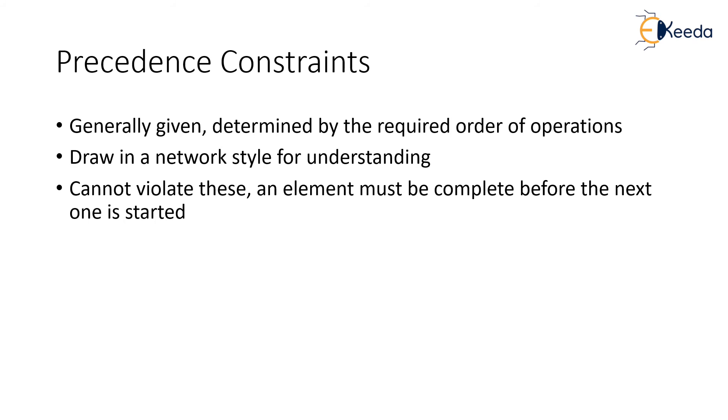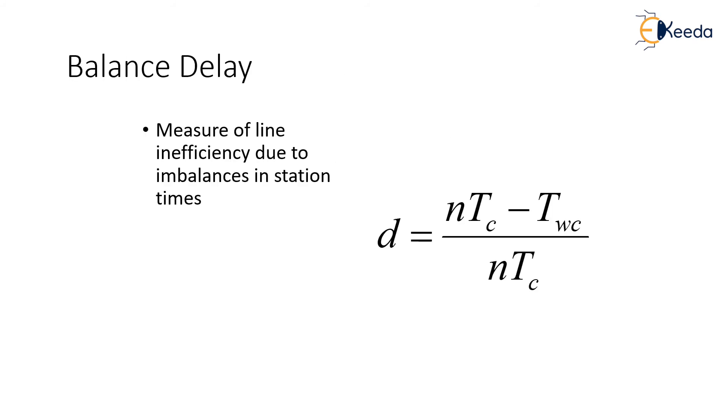The balance delay, d, is equal to (n × Tc - Twc) / (n × Tc), which is the measure of line inefficiency due to the imbalances in station time.